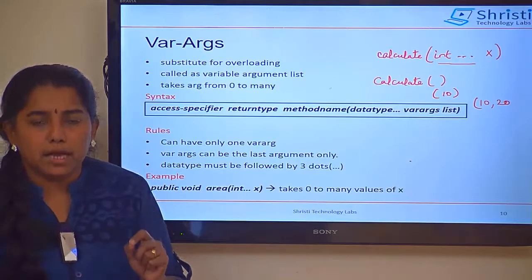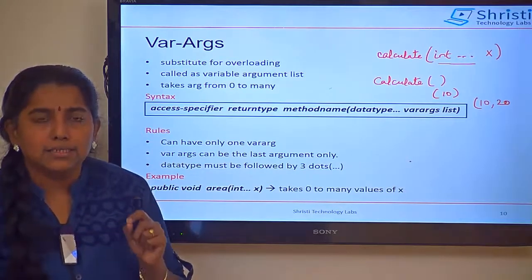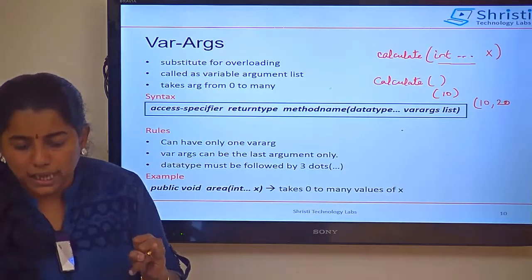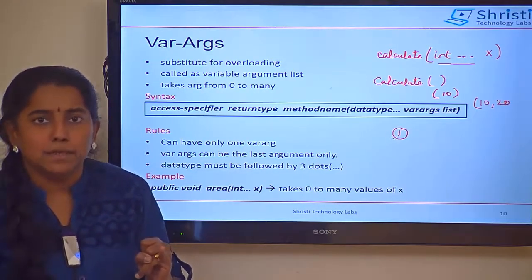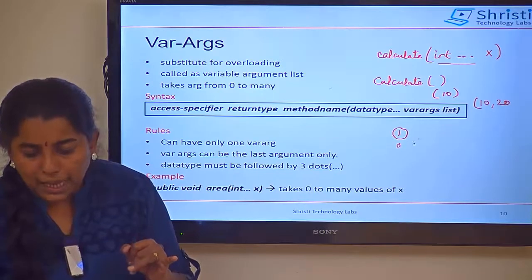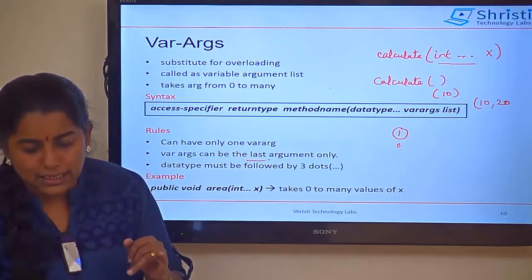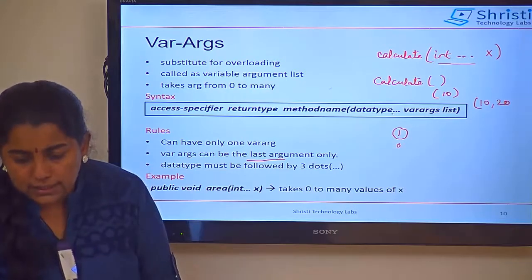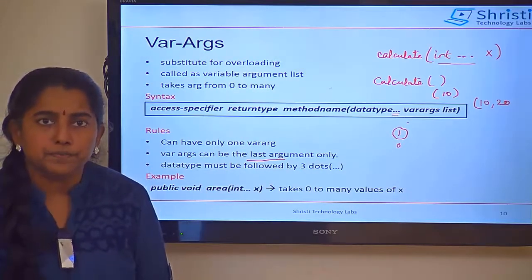When you are using variable arguments or varargs, there are certain rules that has to be followed. The first thing is, you can have only one variable argument in a method. The variable argument should be the last parameter. That is the last argument. And the data type should be followed with three dots. That I have already told you.